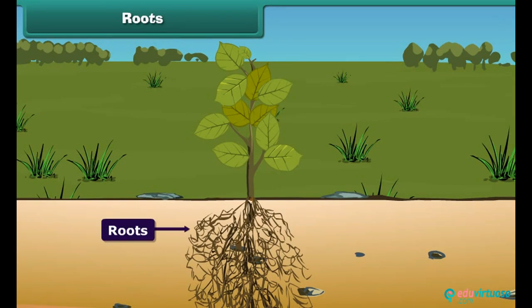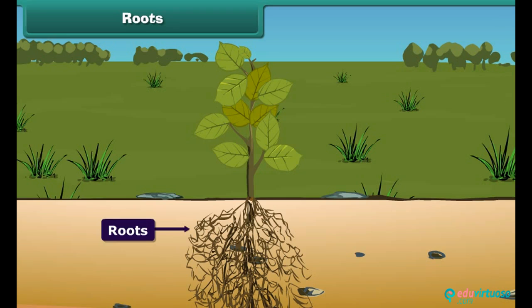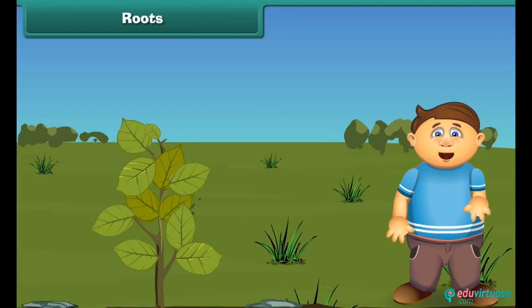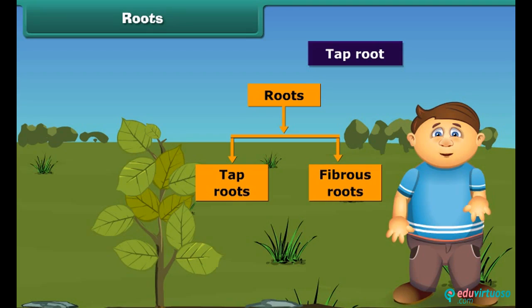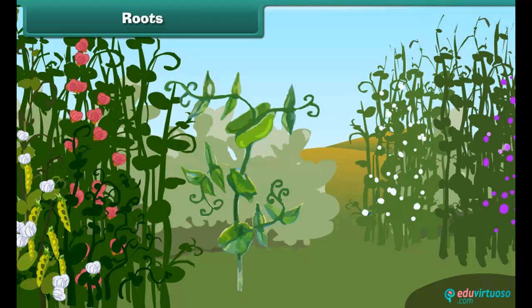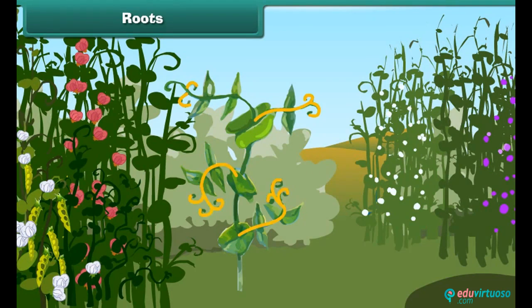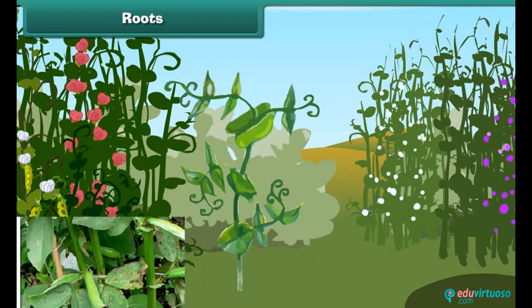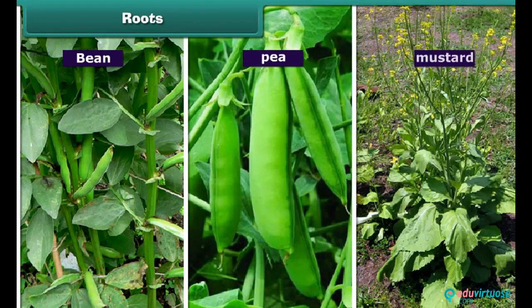The root is the non-green part of the plant which grows under the ground. There are mainly two types of roots: tap roots and fibrous roots. In a tap root, there is a main thick root that grows deeper in the soil, and several weak and thinner roots grow out from this main root. Tap roots are generally found in bean, pea and mustard plants.